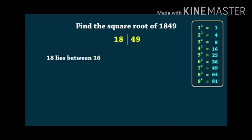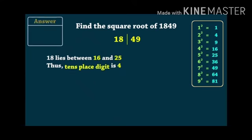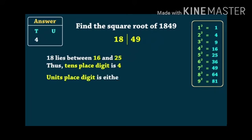18 lies between 16 and 25, that is 4² and 5². So, tens place will be 4, the smaller of the two. For the units digit, it is 9. 9 is the units place of 3² and 7². So, the units place digit is either 3 or 7.